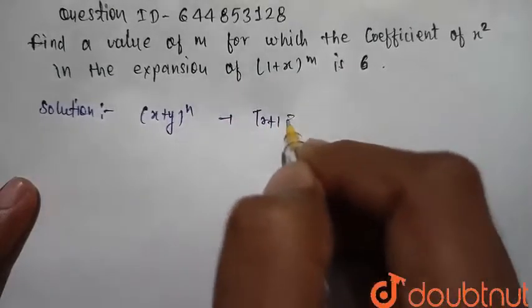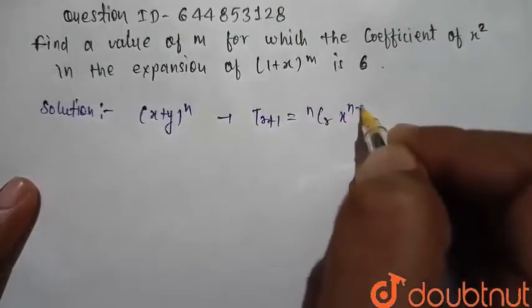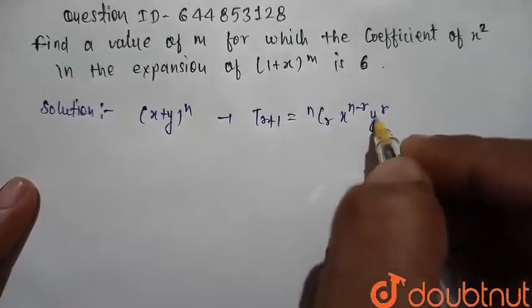We write the general term of this binomial expansion is nCr x raised to power n minus r and y raised to power r.